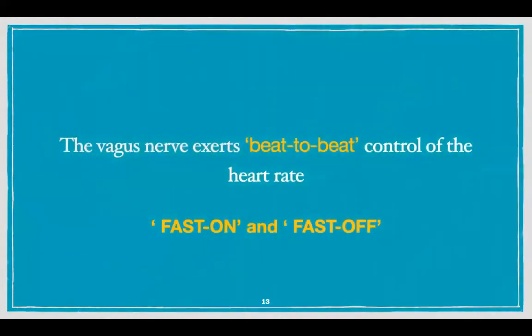Because it has a fast on and a fast off effect, the vagus exerts beat-to-beat control of the heart rate. So beat-to-beat control of heart rate is exerted by the vagus, and it is dominant in the control of heart rate.